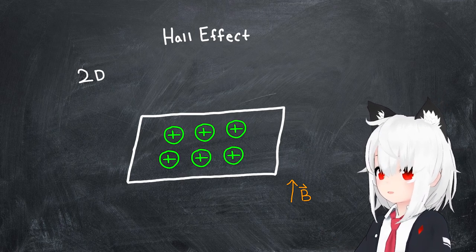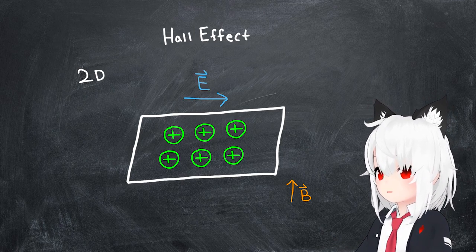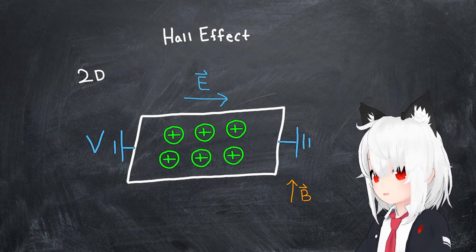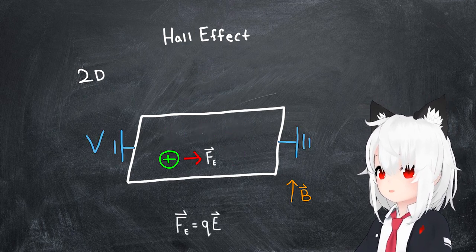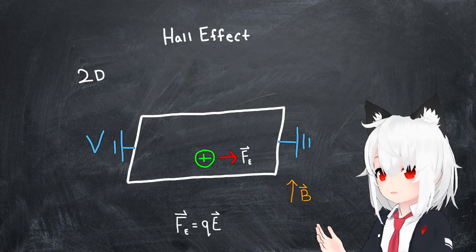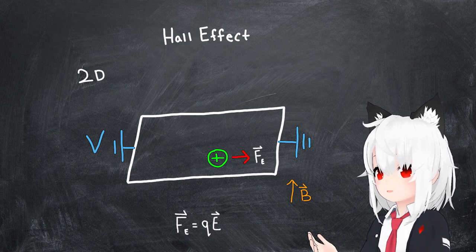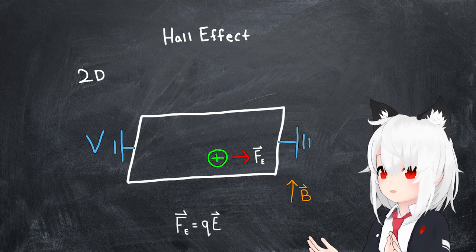If we wanted to move these particles, we'd have to apply an in-plane electric field, or equivalently an in-plane voltage bias. As a result of the Coulomb force, this would push the particles in a direction which is parallel to the applied electric field, but this isn't the only force that they would feel.